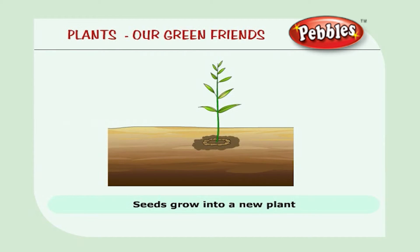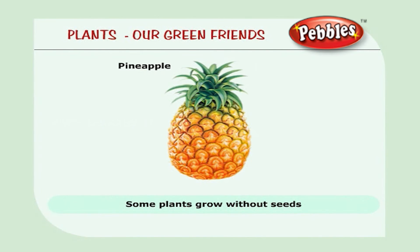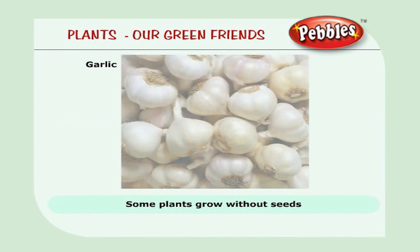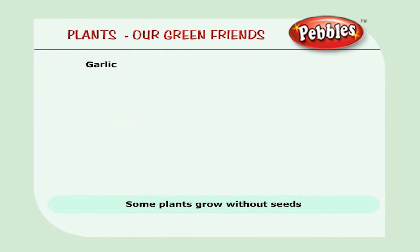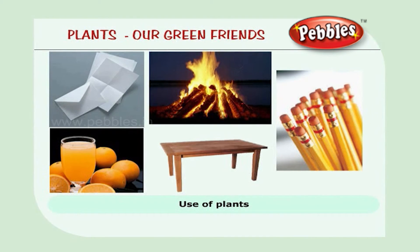The growing of a baby plant from a seed is called germination or sprouting. Some plants grow without seeds. They are pineapple, potato, garlic, onion, and sugarcane.